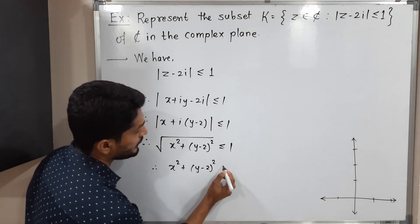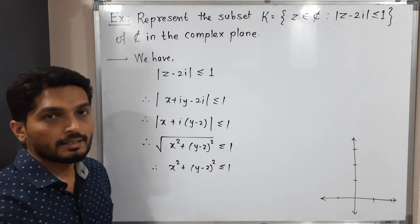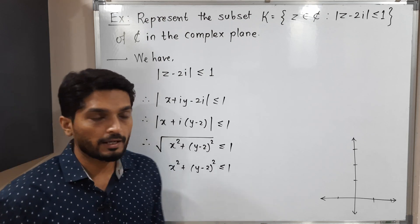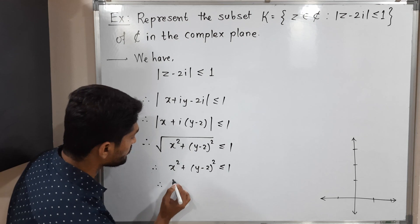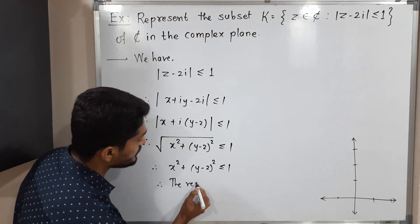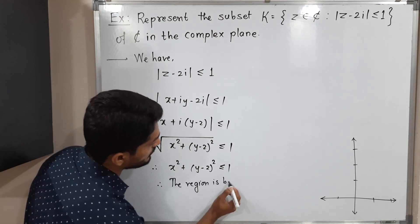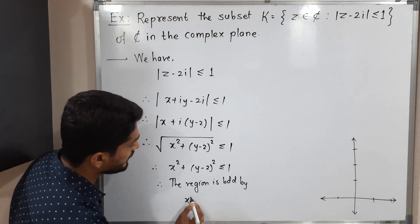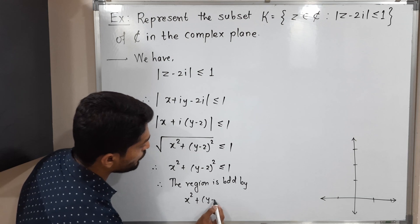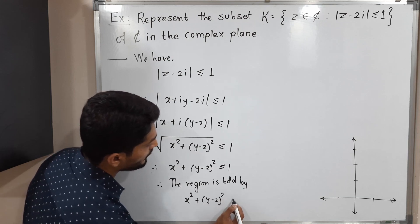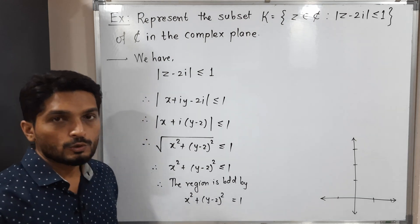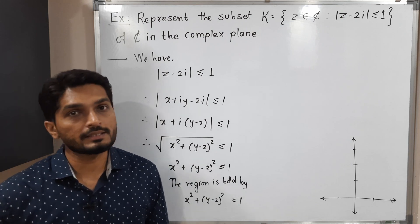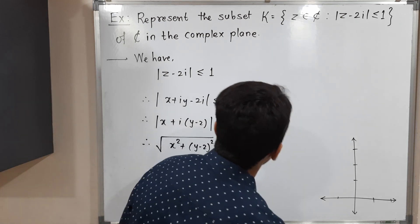To remove the square root, I will square both sides. Therefore x² + (y − 2)² ≤ 1. We get an idea of a curve when we replace the inequality by equality. So the region is bounded by x² + (y − 2)² = 1, which is an equation of a circle.